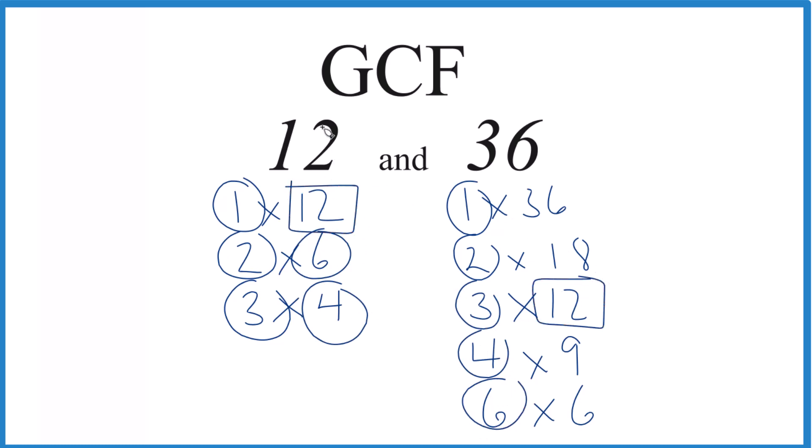12 goes into 12 evenly, and 12 goes into 36 evenly, and it's the greatest common factor. So in answer to our question, the greatest common factor for 12 and 36 is 12.